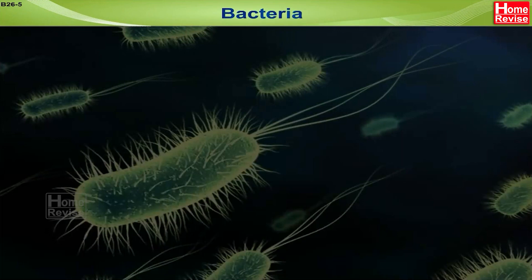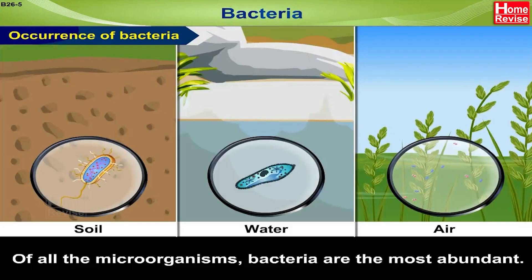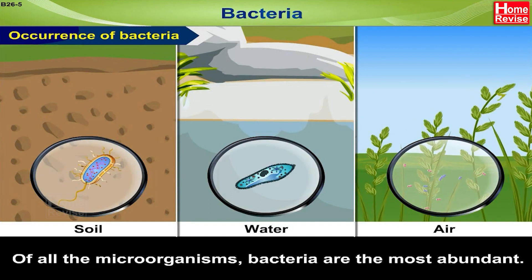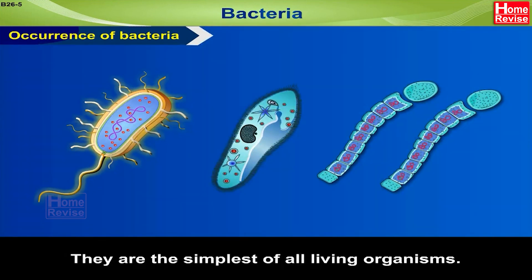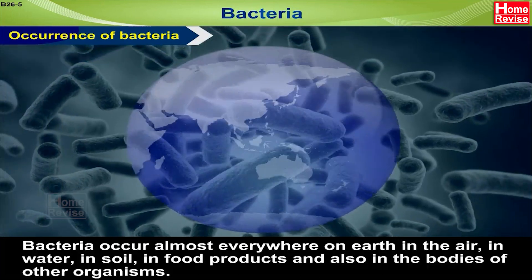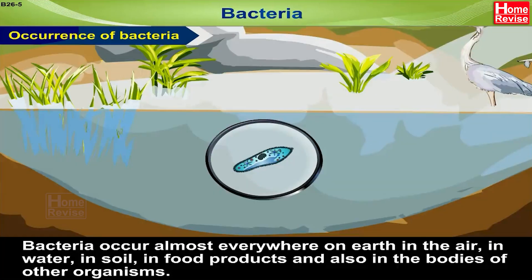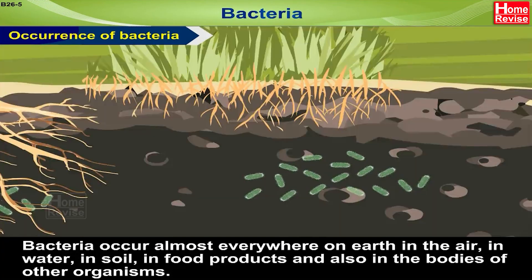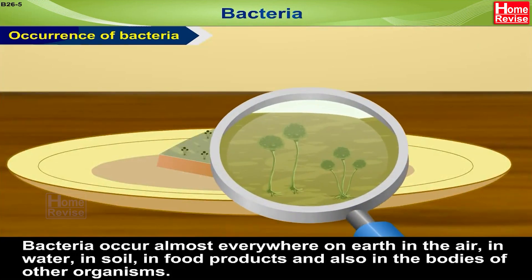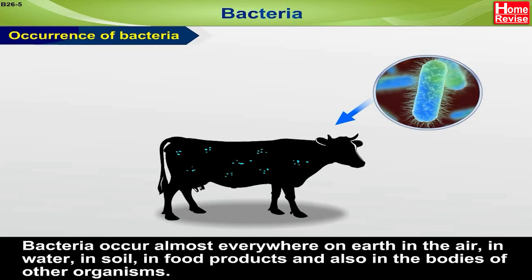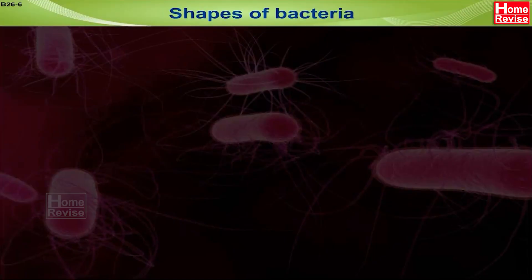Bacteria - Occurrence: Of all the microorganisms, bacteria are the most abundant. They are the simplest of all living organisms. Bacteria occur almost everywhere on earth - in the air, in water, in soil, in food products, and also in the bodies of other organisms.